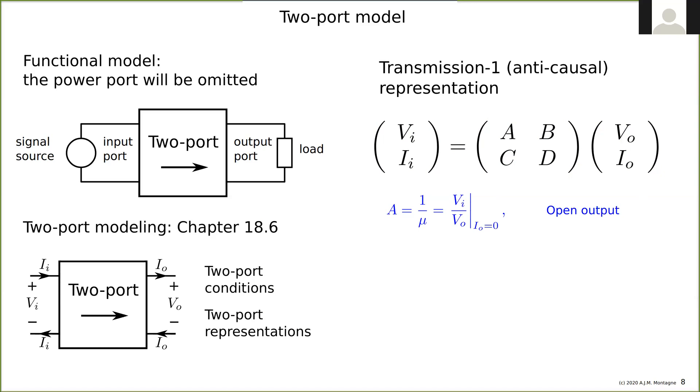This is theoretically what you do. For B you would short it, for C you would leave it open, and for D you would also short it because you want to have current. This is the way how you measure it. However, this doesn't always go well in practical situations.